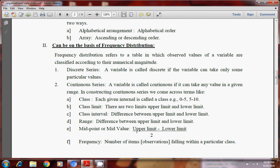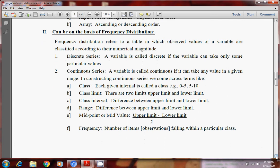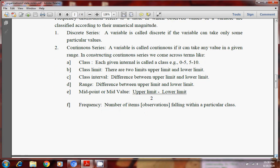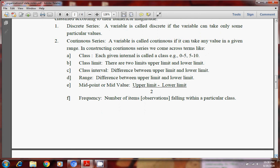Range, difference between upper limit and lower limit is called range. So if we calculate range of this, so 10 minus 5 is 5. 5 minus 0 is 5. Then midpoint or midvalue. What is midvalue? How it is calculated? Midvalue is calculated as upper limit plus lower limit divided by 2. By mistake it is written minus. It should be upper limit plus lower limit divided by 2. Then frequency. Frequency is the number of items falling within a particular class. Means how many times a thing has been repeated that comes in the frequency.